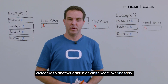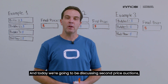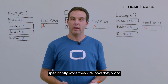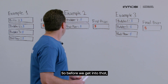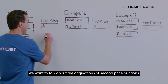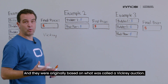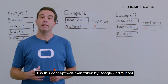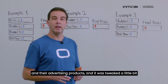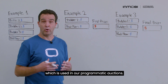Welcome to another edition of Whiteboard Wednesday. My name is Ryan Goss and I'm the Platform Product Manager here at Inmobi. Today we're going to be discussing second price auctions — specifically what they are and how they work. Before we get into that, we want to talk about the origins of second price auctions, which were originally based on what was called a Vickrey auction. This concept was then taken by Google and Yahoo for their advertising products and tweaked to what we have today: the modern-day second price auction used in programmatic auctions.